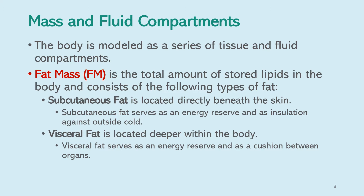Fat mass is the total amount of stored lipid in the body and consists of the following types of fat. The first type is subcutaneous fat, which is located directly beneath the skin. Subcutaneous fat serves as an energy reserve and as insulation against the cold. The second type is visceral fat, which is located deeper within the body.